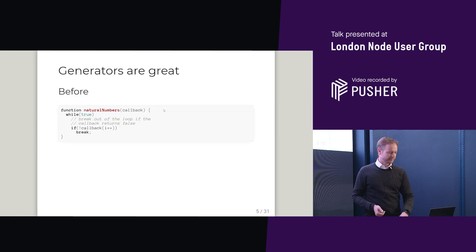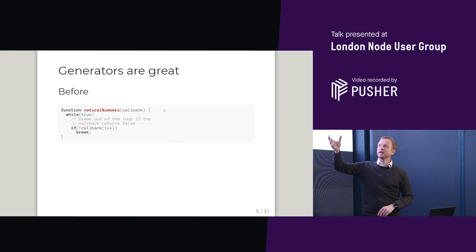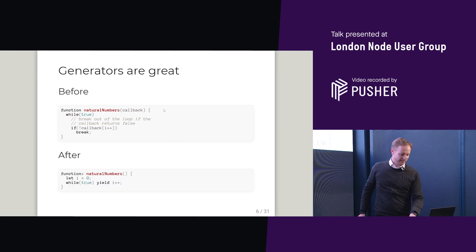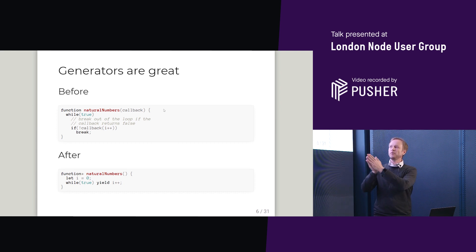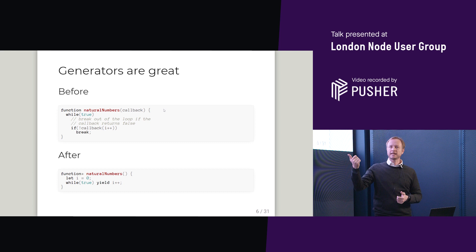So why would you want to use them? Hopefully everyone knows about generators. This is a bit of a manufactured example, but imagine you wanted to get an infinite stream of numbers and you didn't have generators — you might write some fairly awkward code. It is way easier to do with generators. Here we're returning a coroutine and we can essentially for-loop through the natural numbers for as long as we're interested, and then stop.